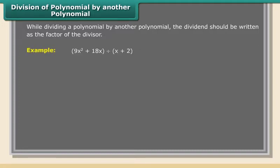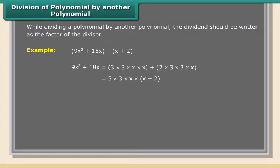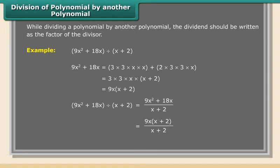Example: 9x squared plus 18x divided by x plus 2. We factor the dividend: 9x squared plus 18x equals 3 times 3 times x times (x plus 2), which simplifies to 9x times (x plus 2). Therefore, 9x squared plus 18x divided by x plus 2 equals 9x times (x plus 2) upon (x plus 2).